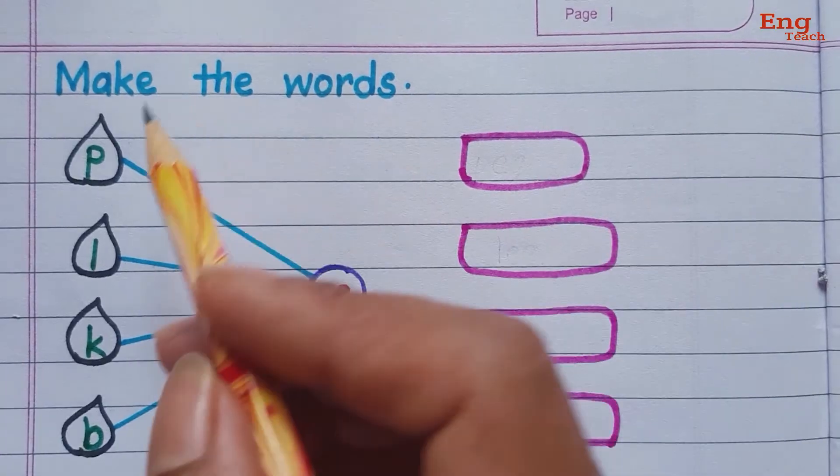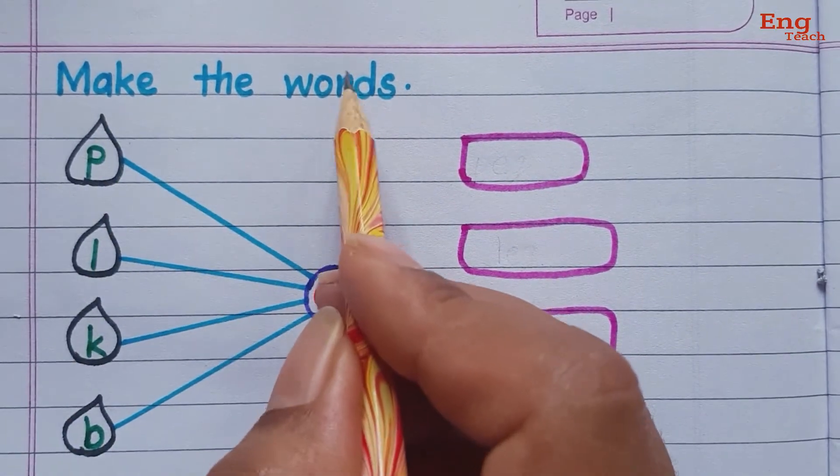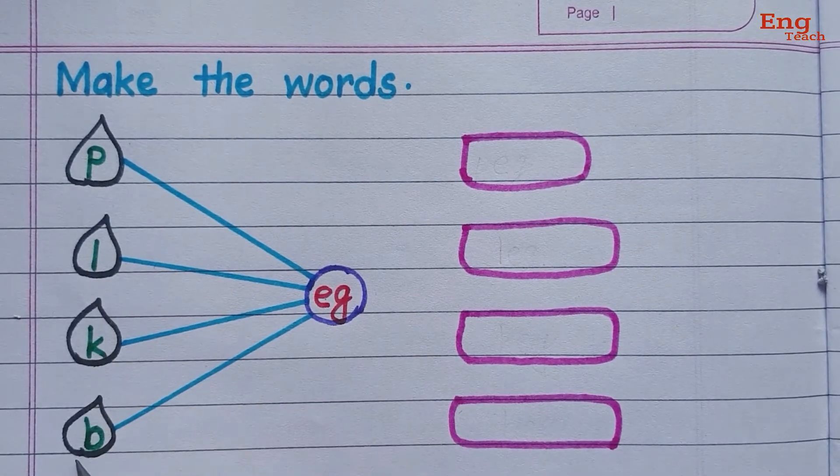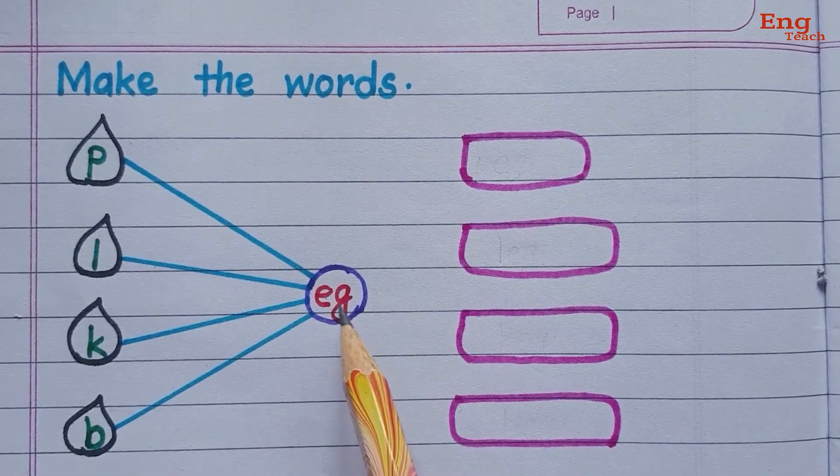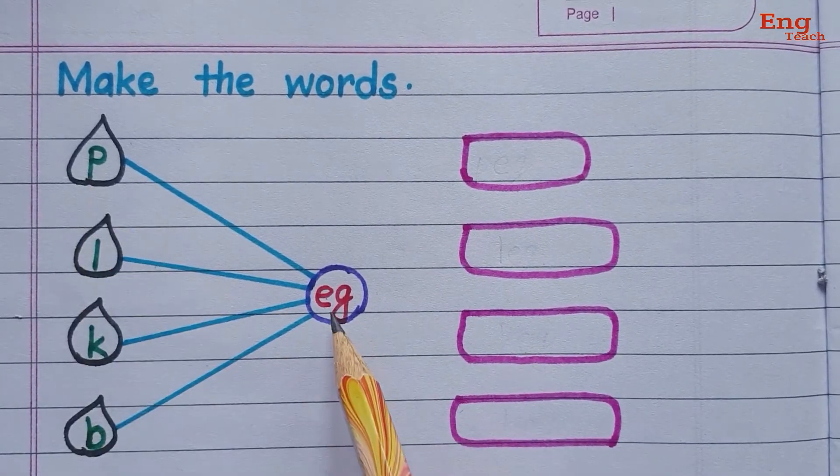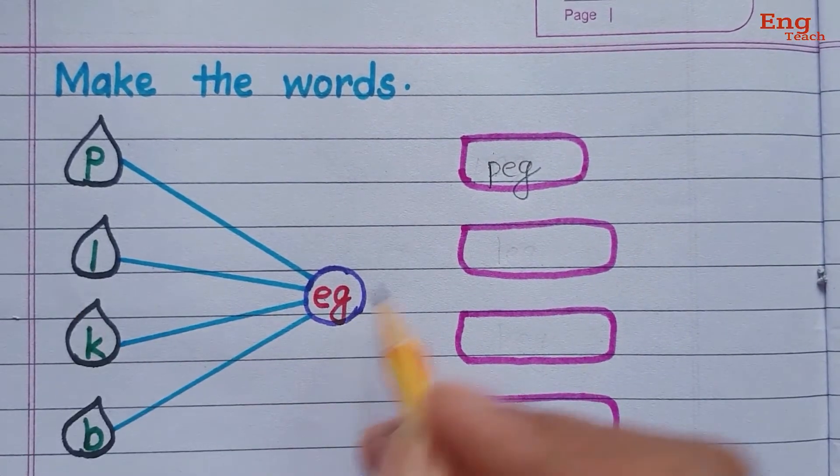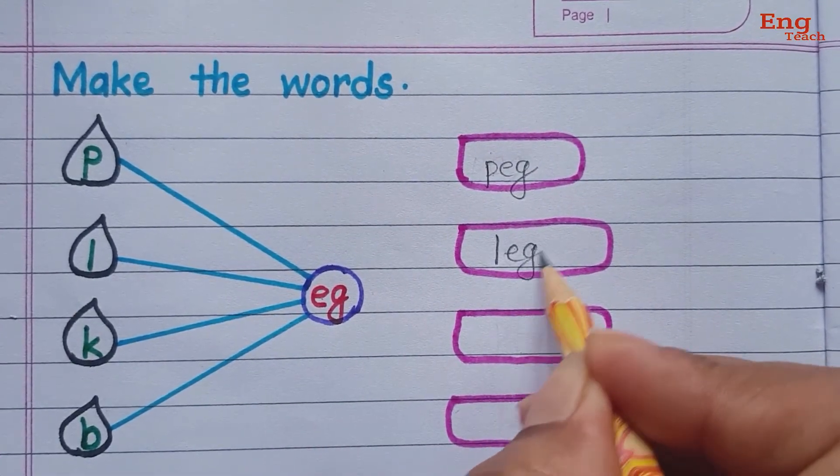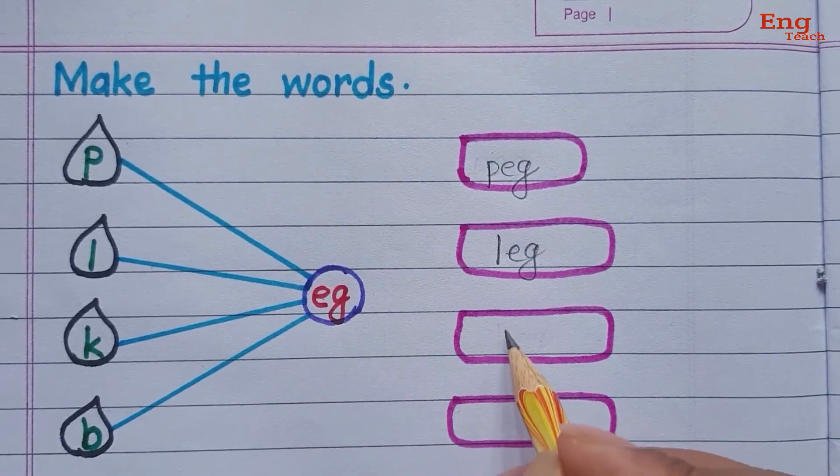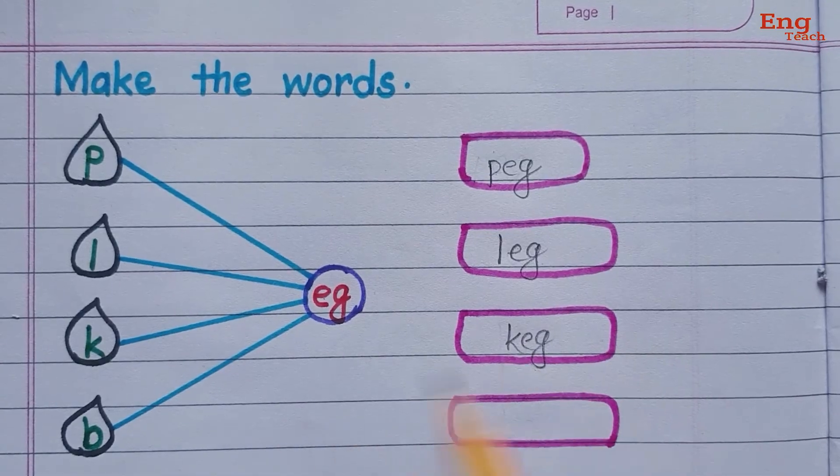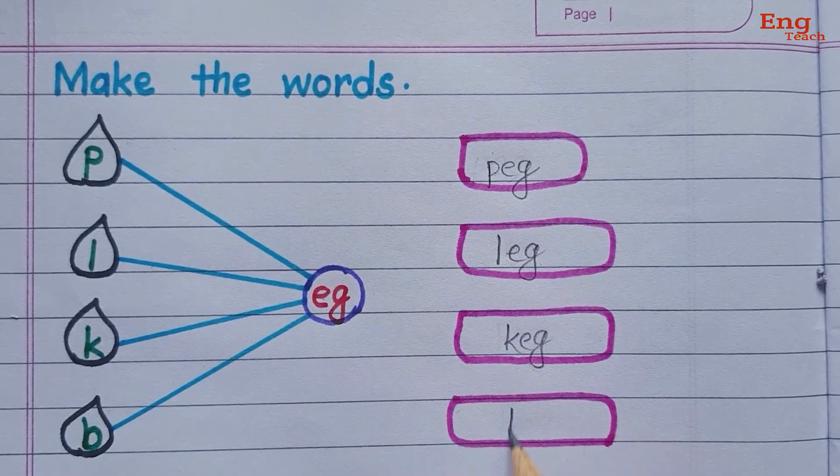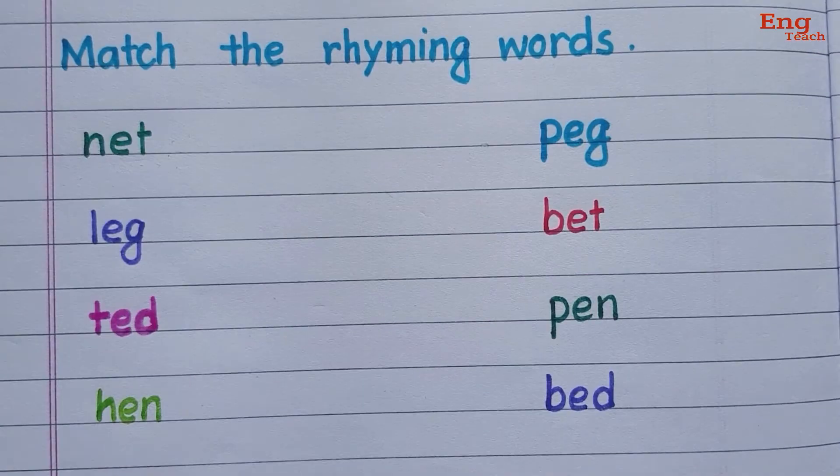Now, here are some words. Make the words. Here are given the letters and here are two-letter words. P plus eg equals peek, L plus eg equals lake, K plus eg equals keg, B plus eg equals beek.